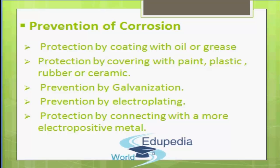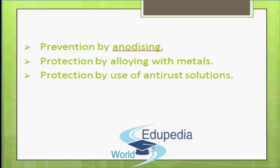The fifth method is protection by connecting with a more electropositive metal. Corrosion is prevented when an iron pipe is connected with a block of magnesium — magnesium, being more electropositive than iron, gets oxidized, protecting iron from oxidation. The next method is prevention by anodizing — corrosion is prevented by anodizing aluminum articles by coating with a thick protective layer of aluminum oxide.